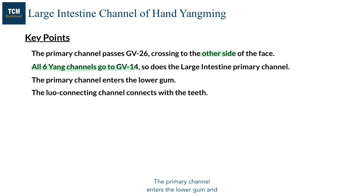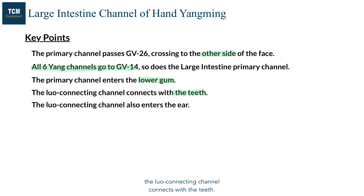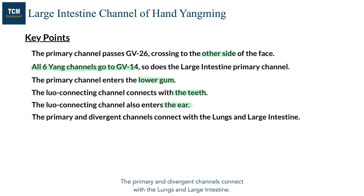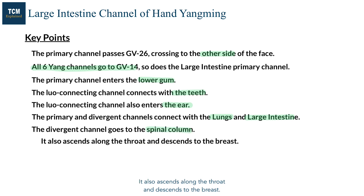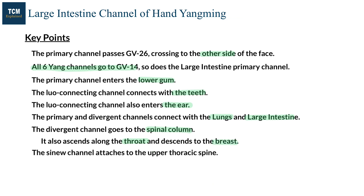The primary channel enters the lower gum and the lower connecting channel connects with the teeth. The lower connecting channel also enters the ear. The primary and divergent channels connect with the lung and large intestine. The divergent channel goes to the spinal column, ascends along the throat, and descends to the breast.